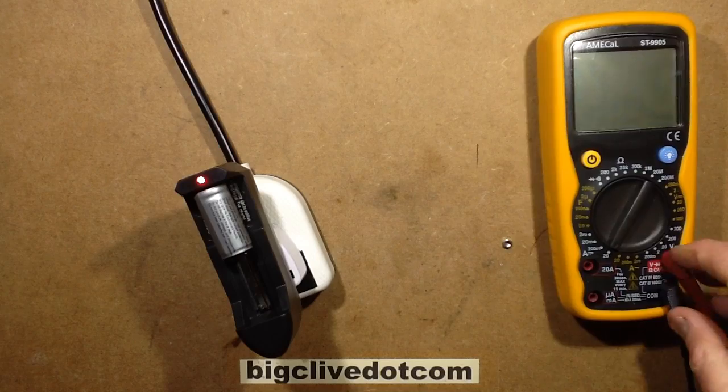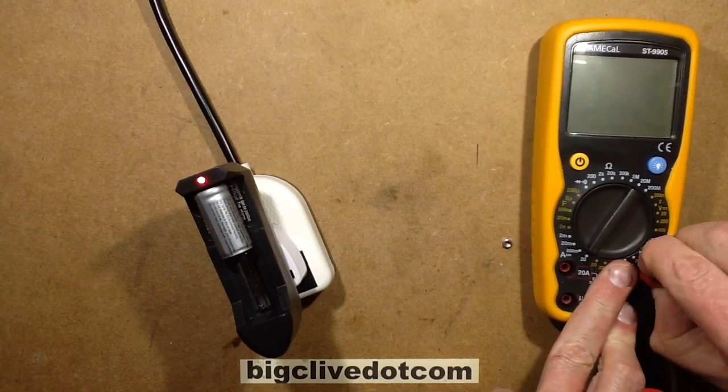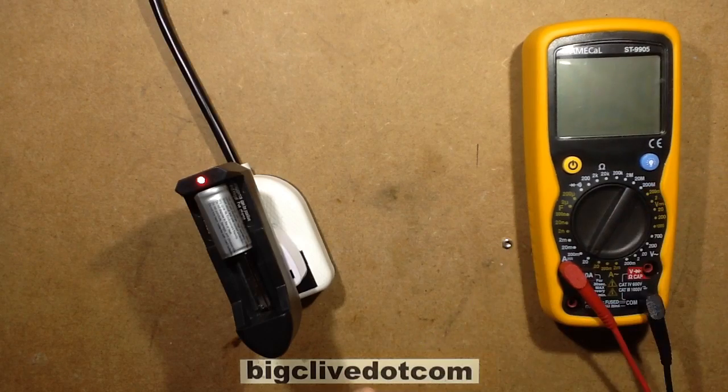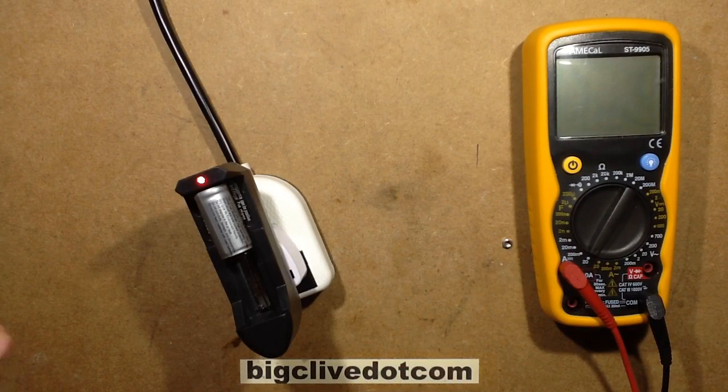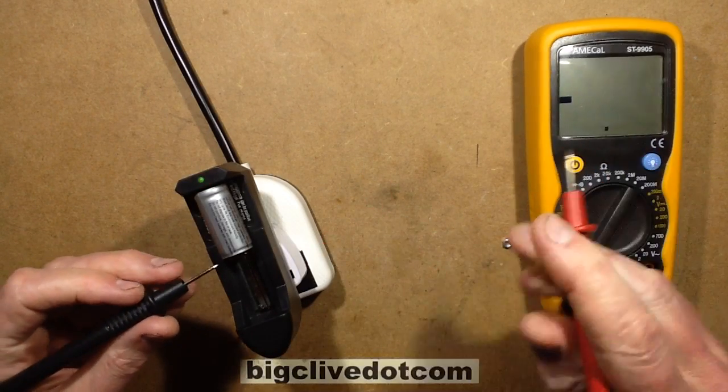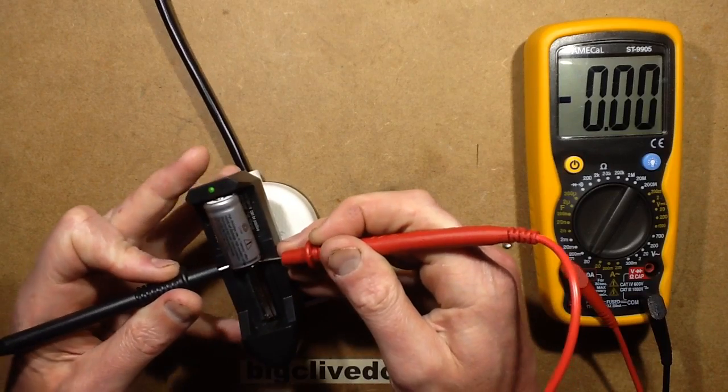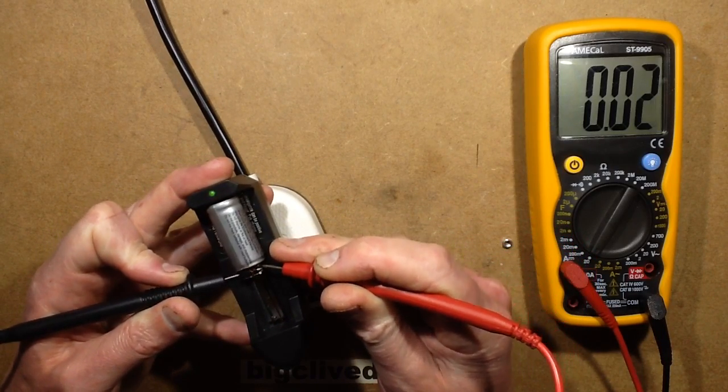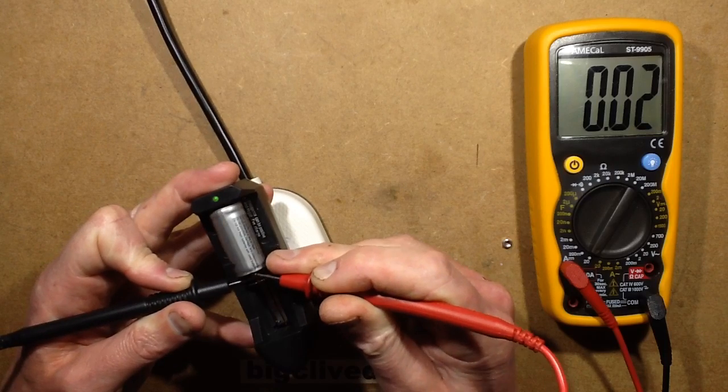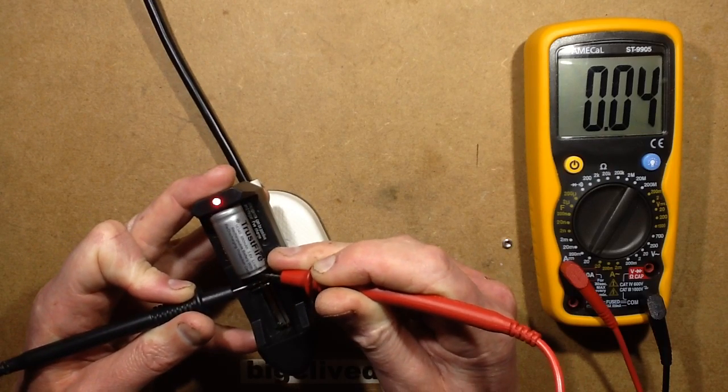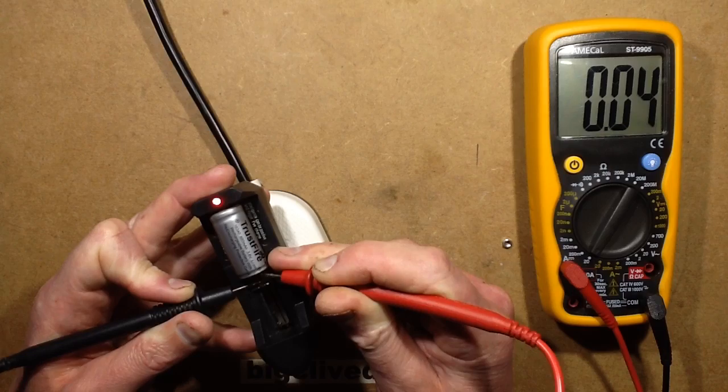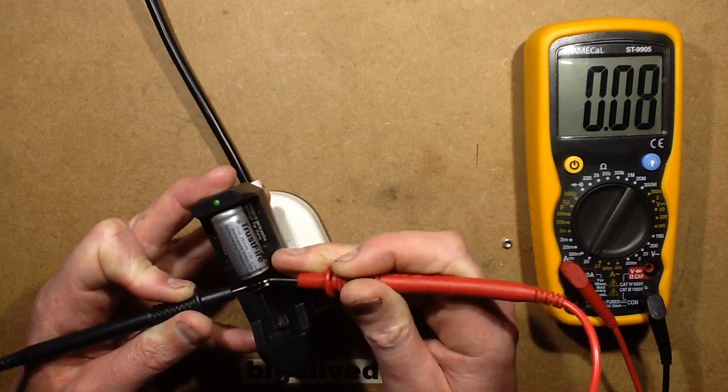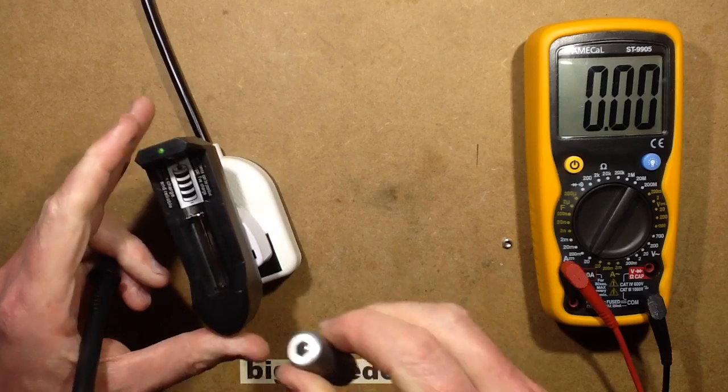Let's measure the current first. I'm using this on the 10 amp range or the 20 amp range in this case, so I don't add too much resistance. Here's the negative, I'm going to break into the circuit here. There we go and it's showing about 40 milliamps. It's dropped down to - it was at 300 milliamps earlier on.